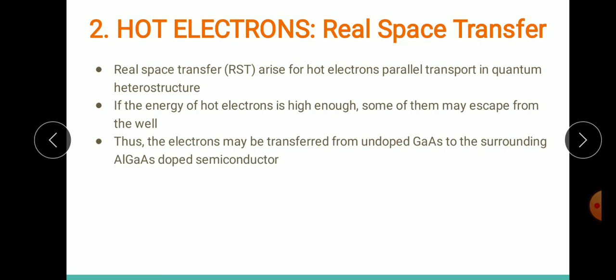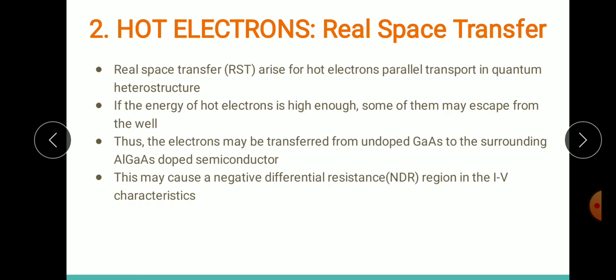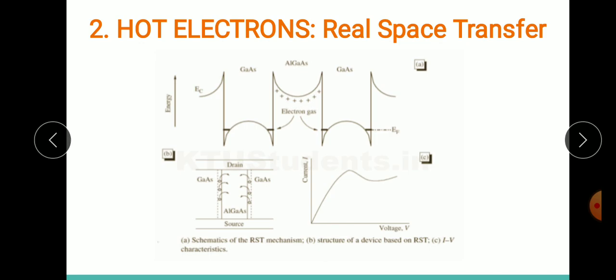The electrons are being transferred from gallium arsenide — which has maximum mobility — to the aluminum gallium arsenide region of lower mobility. The voltage between source and drain controls this transfer. As a result, there is a negative differential resistance (NDR) in the IV characteristics. In a modulation-doped heterostructure, normally transfer happens from AlGaAs to the GaAs region, and electrons are trapped in the quantum well.